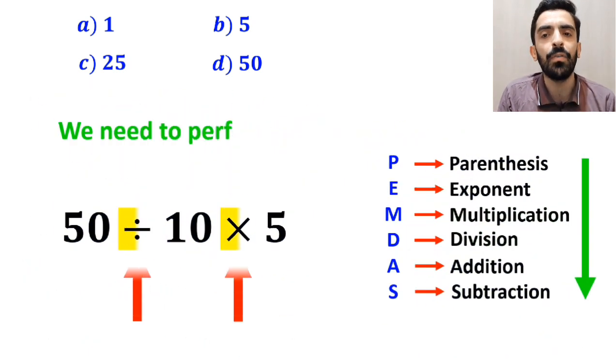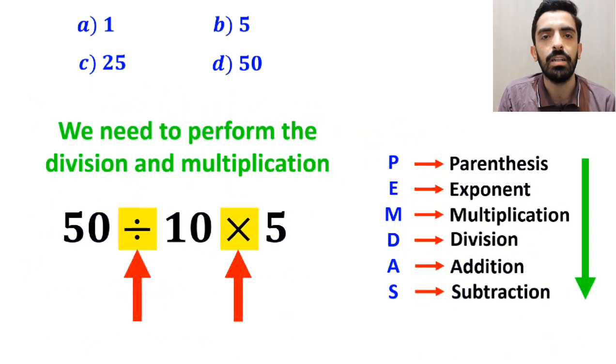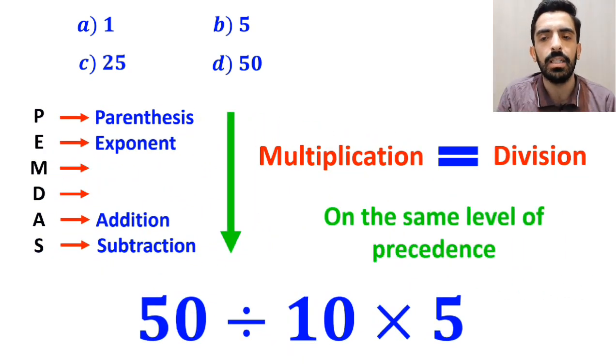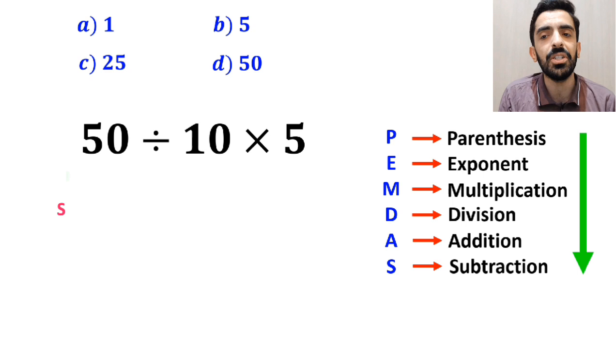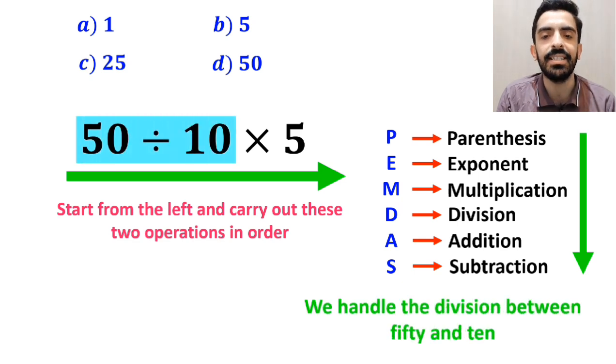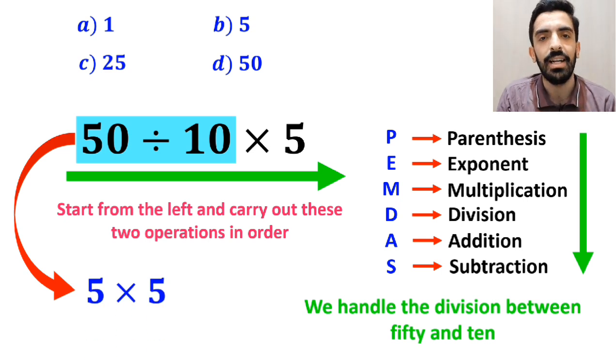Now we need to perform the division and multiplication. However, it's very important to keep in mind that multiplication and division are at the same level of priority. In this case, the best approach is to start from the left and carry out these two operations in order. So first we handle the division between 50 and 10, which simplifies this expression to 5 multiplied by 5. And finally, the answer becomes 25.